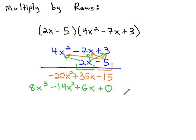The nice part about rows is it lines up our like terms for us as we add them together. We have 8x cubed, then minus 20x squared and minus 14x squared is negative 34x squared.